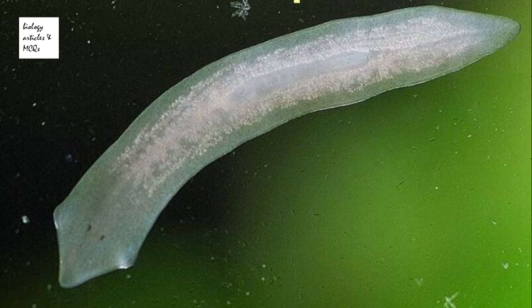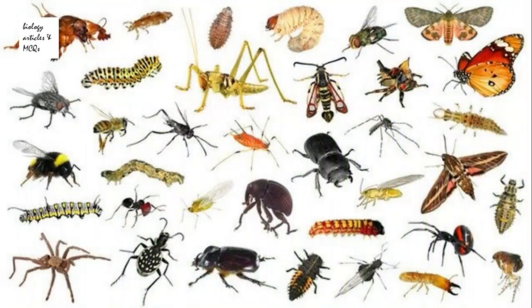Planaria is a carnivorous animal. As the name carnivorous shows, it feeds on flesh — that can be of insects and larvae, or it can be annelids and mollusks.